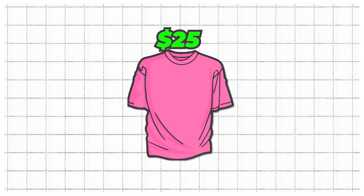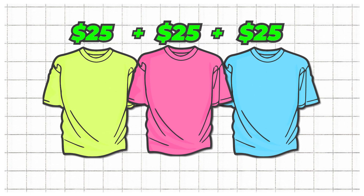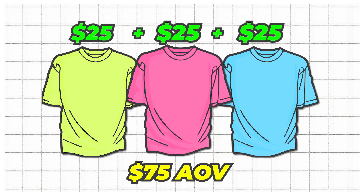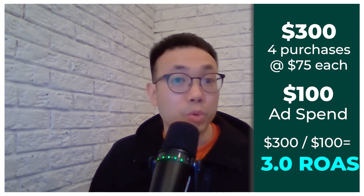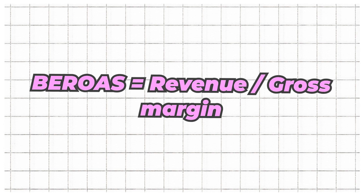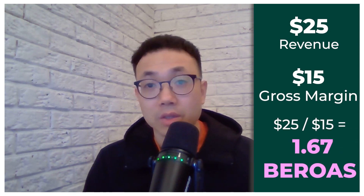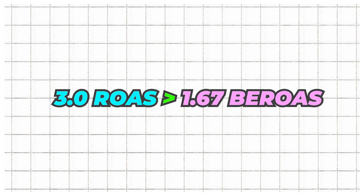But CPA is not a perfect number because it doesn't account for customers who buy more than one thing. In our previous example, what if each of those four purchases had customers that actually bought three shirts instead of just one, so that we have an AOV — average order value — of $75? This is where ROAS, return on ad spend, comes in. Your ROAS is your revenue divided by your ad spend. So if we get four purchases at $75 each, that sums up to $300, and since we have that same $100 of ad spend, this will give us a ROAS of 3.0. Our breakeven ROAS is our revenue divided by our gross margin. Since we calculated our gross margin at $15, this would be $25 divided by $15, which gives us a 1.67 breakeven ROAS. Since our 3.0 is larger than 1.67, we know that these ads are actually profitable.